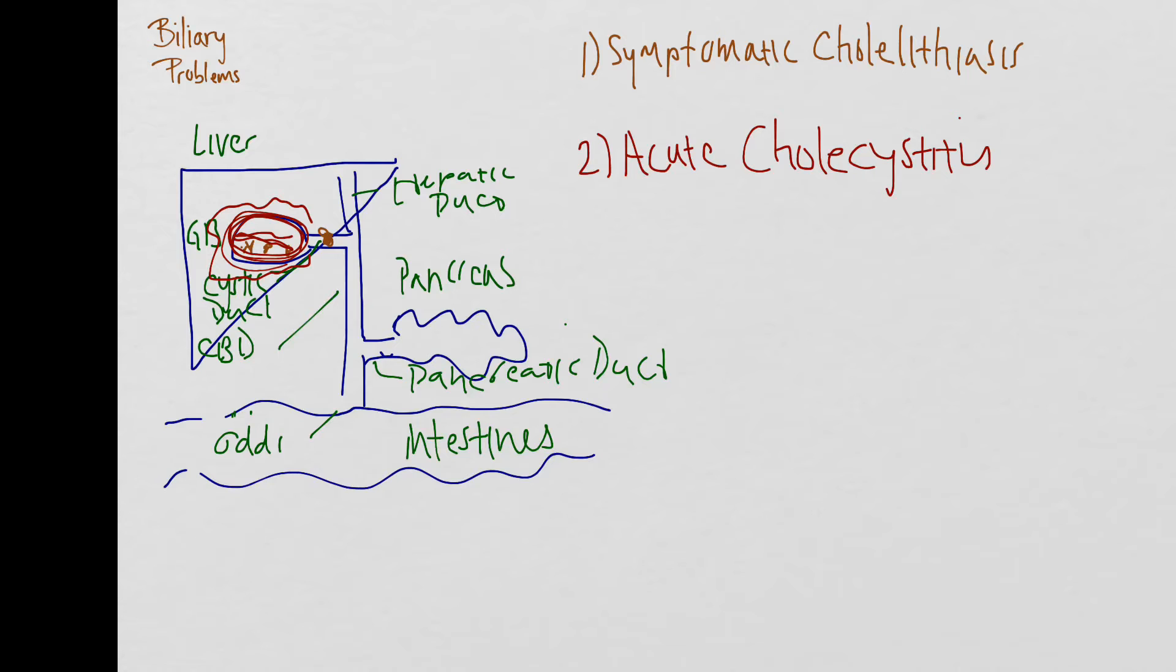So again, to review the findings consistent with acute cholecystitis, you'll be looking for gallbladder wall thickening, sludge, pericholecystic fluid, and finally a Murphy's sign.